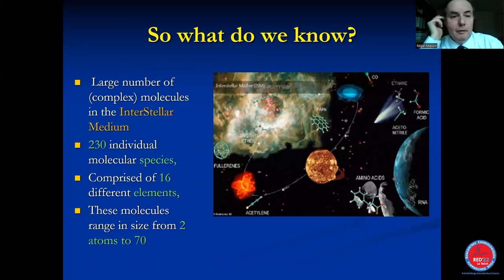What do we know? Well, what we do know is that in the interstellar medium, that is that apparent regions of emptiness in space, many, many molecules exist. Indeed, about 230 individual molecular species have now been identified. And those molecular species consist of 16 different elements. The molecules themselves vary in size from diatomics like oxygen, hydrogen, nitrogen, through to very more complicated systems, like, for example, carbon-70.